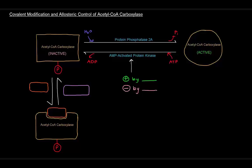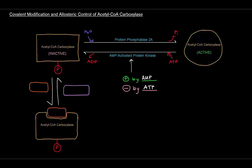That kinase specifically is AMP-activated protein kinase. This protein is activated by AMP (adenosine monophosphate), which is an indicator of low energy, and it's inhibited by ATP. You might think it's strange that ATP is used in this reaction if the kinase is inhibited by ATP. The idea is that if there's high AMP, this reaction will still be active, and even without much ATP around, there may be enough to drive this reaction and produce the inactive carboxylase.